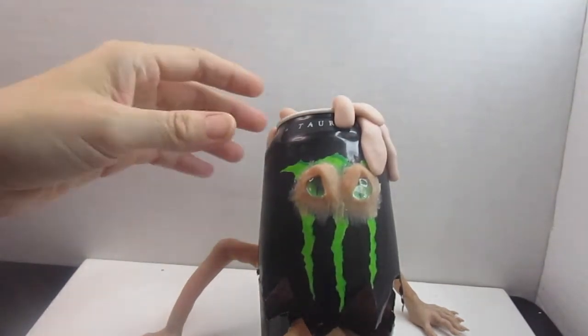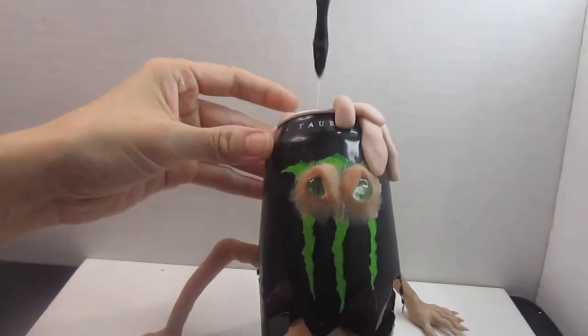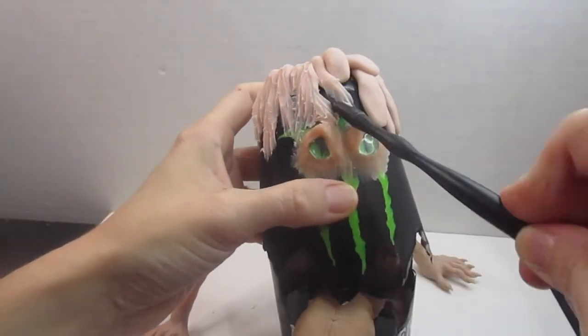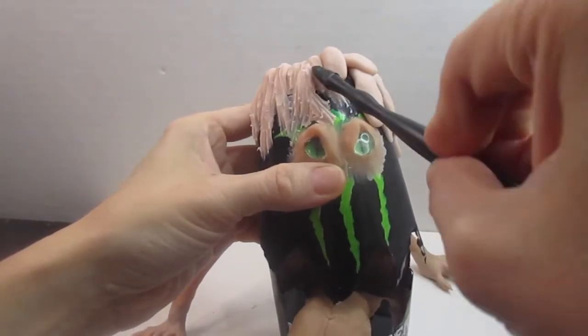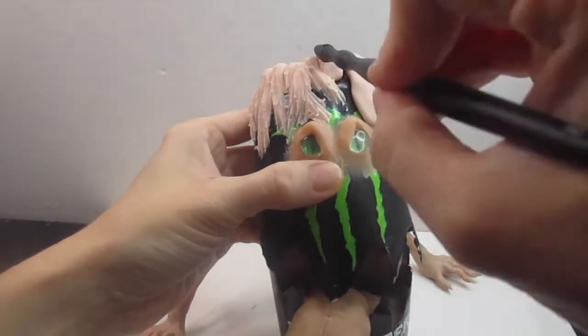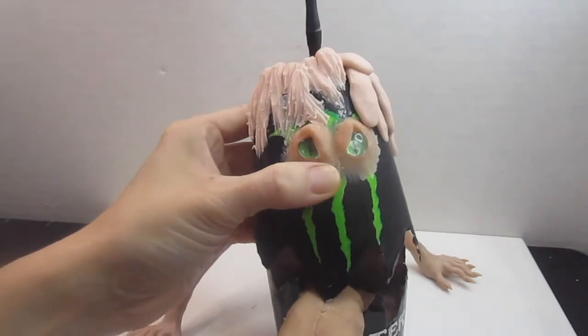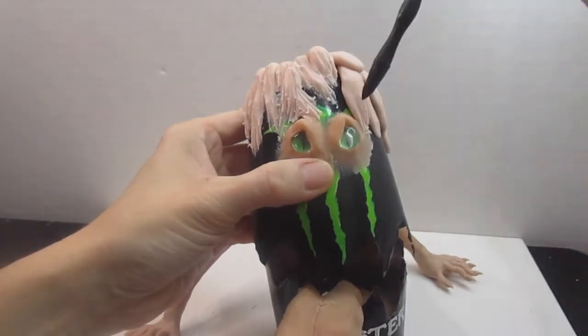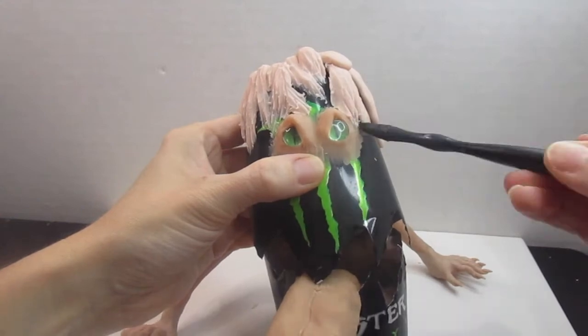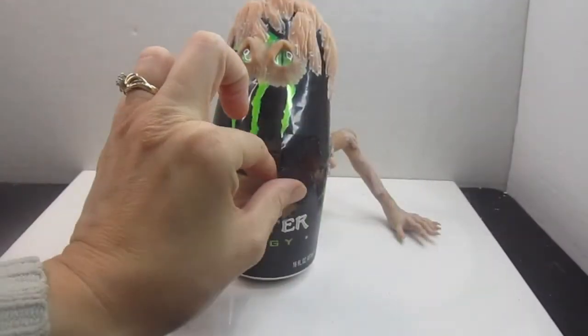Once I get all the pieces on there the way I want it, I'm going to use my clay sculpting tool to create this texture to give him these lines and stuff in it. I like using the clay sculpting tool because it's soft and it bends and it gives it a lot of almost a fur-like texture, but I was going for more like sludge.